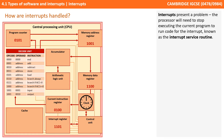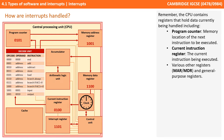Interrupts present us with a bit of a problem. The processor will need to stop executing its current program to run the code for the interrupt, known as an interrupt service routine. The CPU contains registers that hold data currently being handled, including the program counter — the memory location of the next instruction — the current instruction register, the actual instruction currently being carried out, and various other registers like the MAR and MDR.